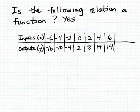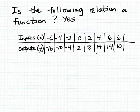What ordered pairs could we add to this relation so that it would no longer be a function? For instance, if we use the input 6 again but match it with a different output — say 10 — then this relation, although it's still a relation because it's still a set of ordered pairs, is no longer a function. That same input 6 would be matched with two different outputs, which we cannot have.